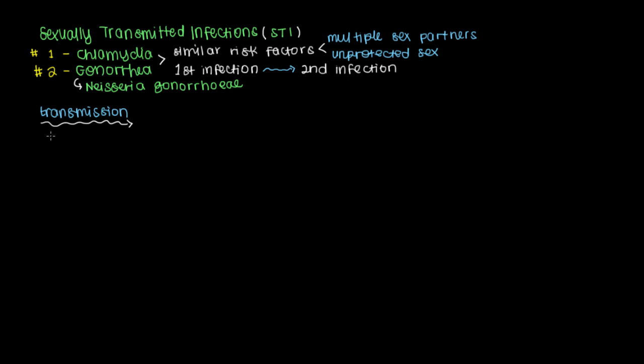Most commonly, gonorrhea will be transmitted through sex, which can include oral sex, vaginal sex, or even anal sex. Another important mechanism of transmission includes childbirth, and we'll talk more about the outcomes of that in a minute. So these are the main ways that gonorrhea can be transmitted.